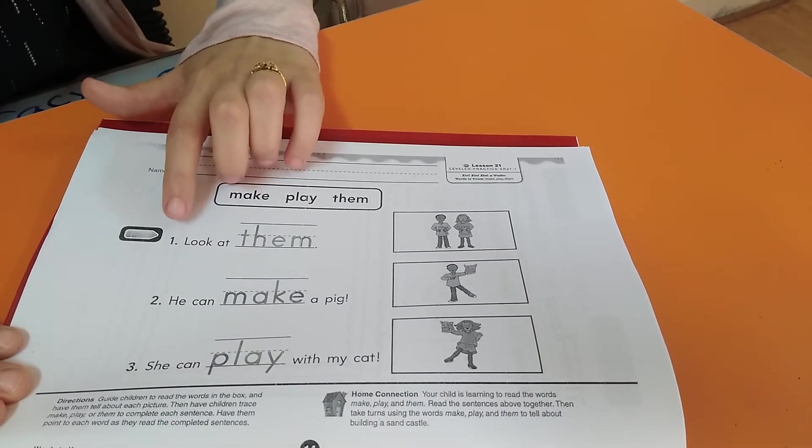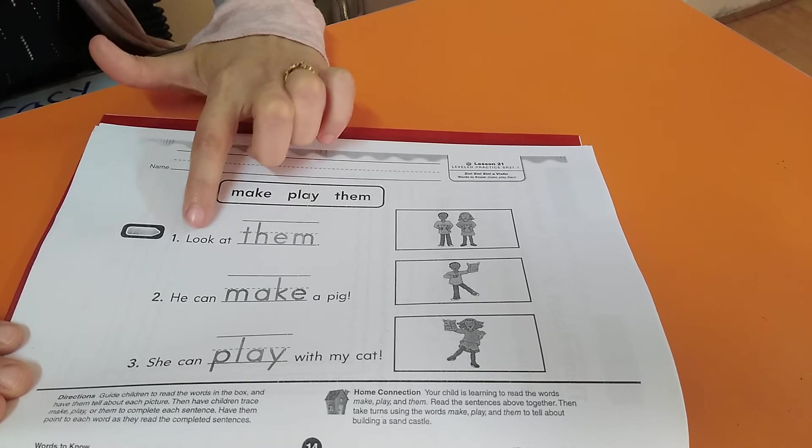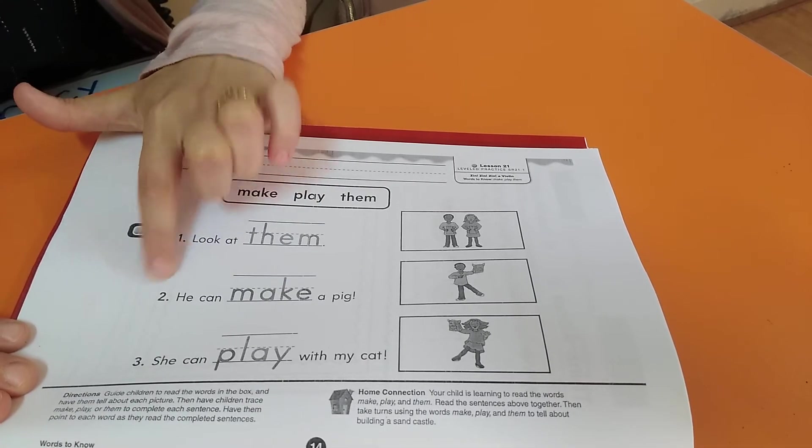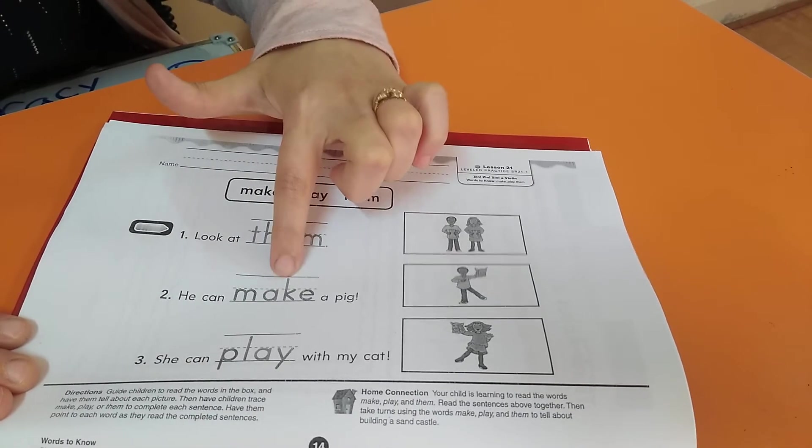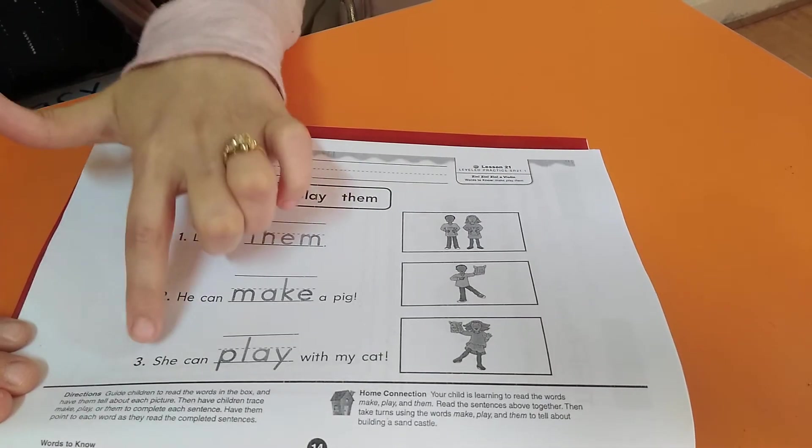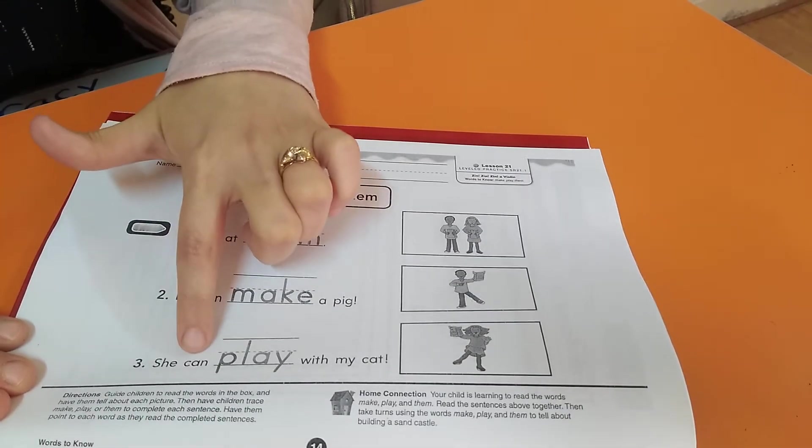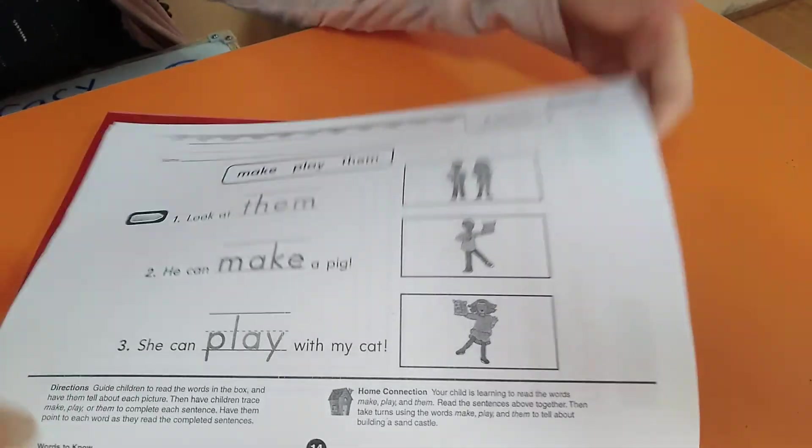Let's read all one more time. One. Look at them. Two. He can make a pig. Three. She can play with my cat.